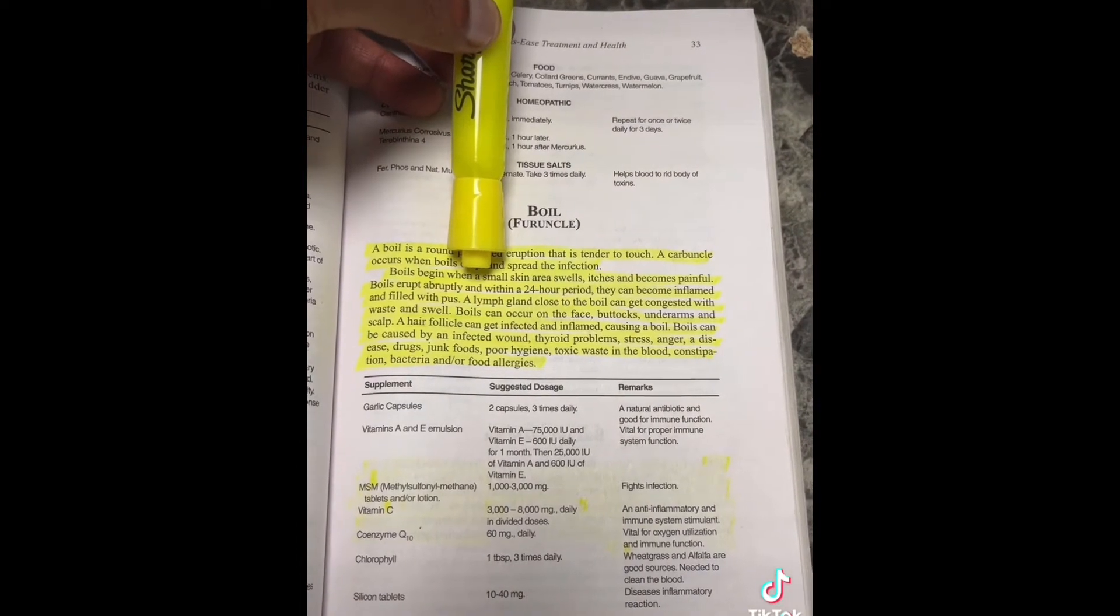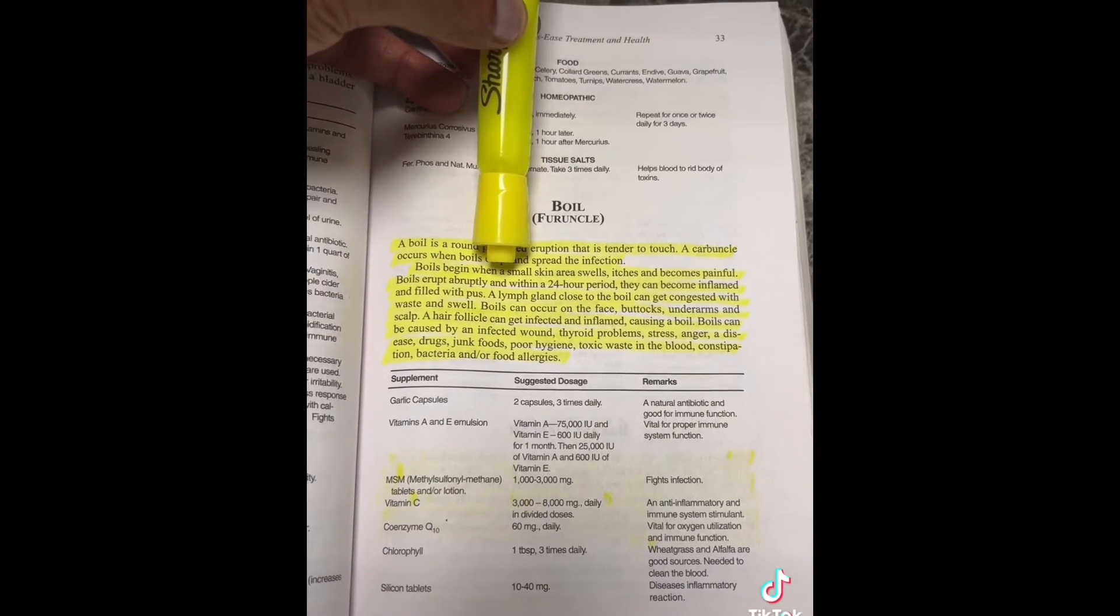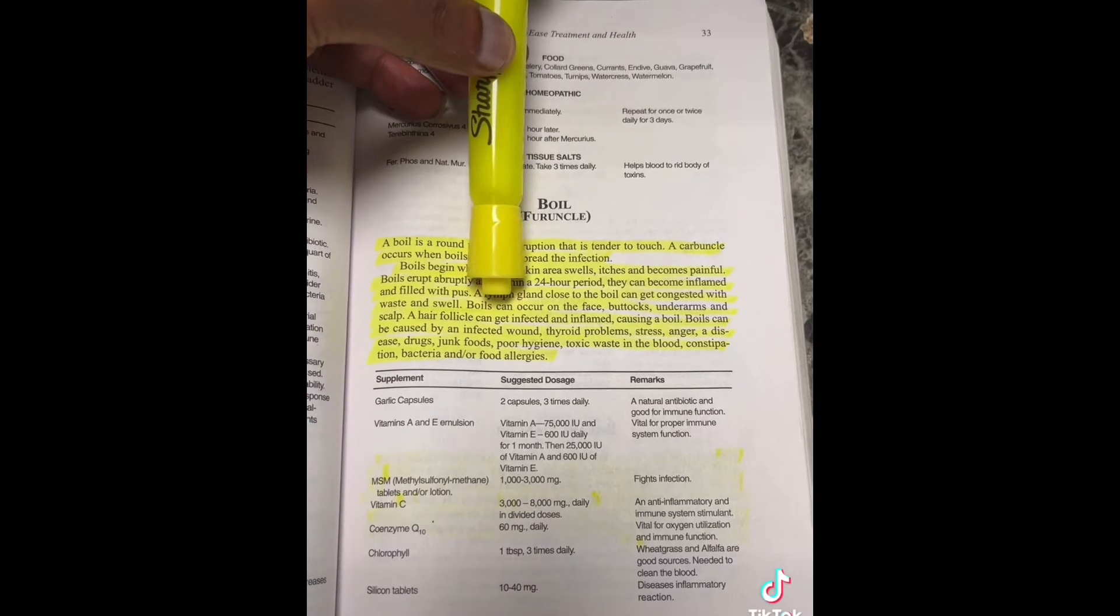Boils can occur on the face, buttocks, underarms, and scalp. A hair follicle can get infected and inflamed, causing a boil.